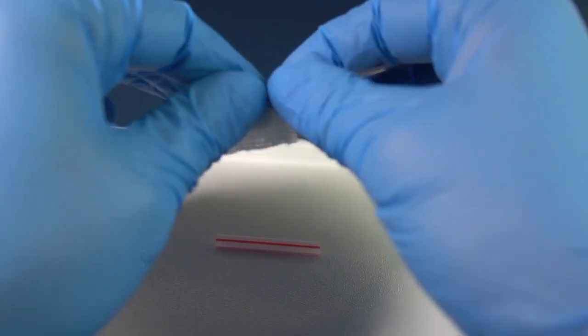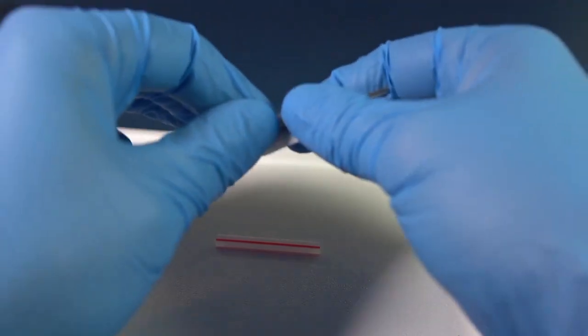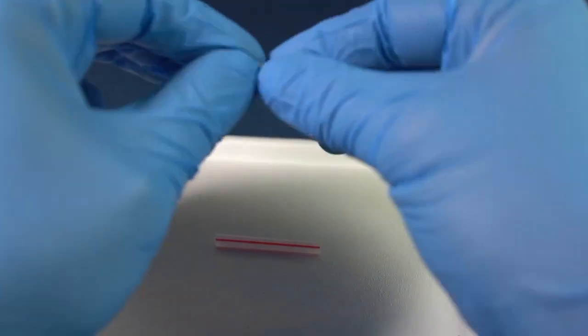Take a zinc rod and wrap it with a piece of cloth, which will later absorb zinc salt. Then insert the wrapped zinc rod into the straw.